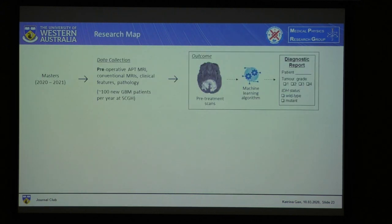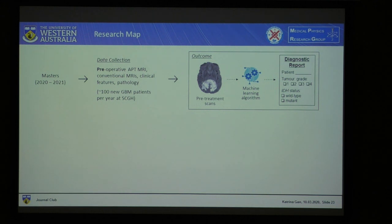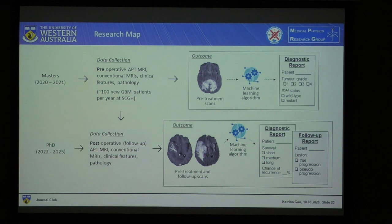My research map shows I am currently in my master's, which I'll be doing for two years. We need to collect pre-operative MRIs and other information — about 100 new glioblastoma patients per year at Charlie's. The outcome I hope to achieve is a machine learning algorithm that can analyze pre-treatment scans and create a diagnostic report indicating tumour grade and IDH mutation status. Then in my PhD, I hope to also collect post-operative MRIs and create both a diagnostic report and a follow-up report.